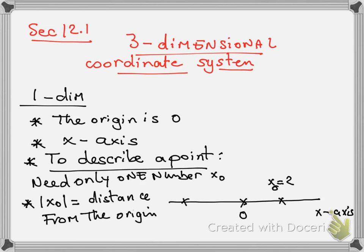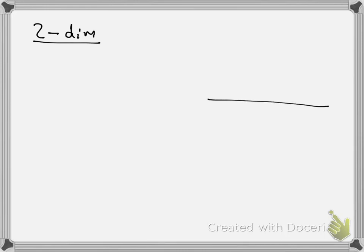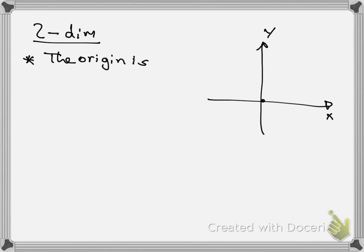For example, the distance between negative three and zero is not negative three — it must be positive — so we take the absolute value of negative three, which is positive. Now in the case of a two-dimensional coordinate system, we're going to have two axes: the x-axis and the y-axis. We again have the origin, which is described by two numbers: (0, 0).